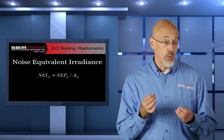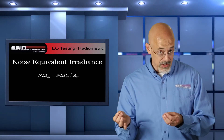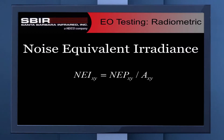When we look at calculating noise equivalent irradiance, we take the total power that's arrived at our sensor and we divide by the area of the sensor taking that measurement. Remember, irradiance is flux divided by the area of the sensor element. Noise equivalent power divided by the area of the sensor element gives us our noise equivalent irradiance, or noise equivalent flux density.